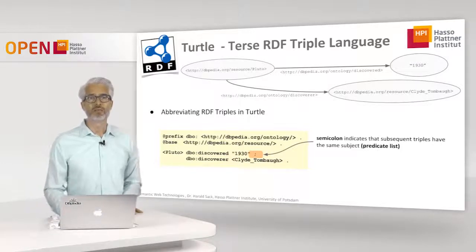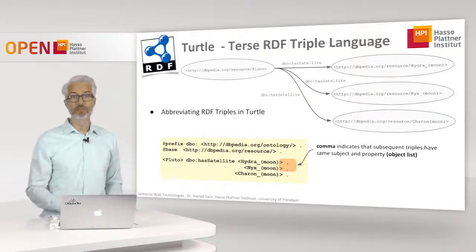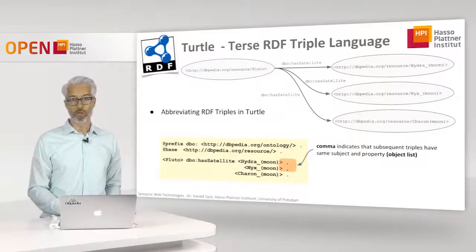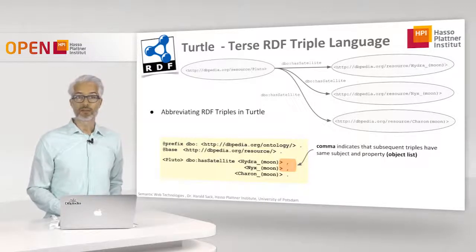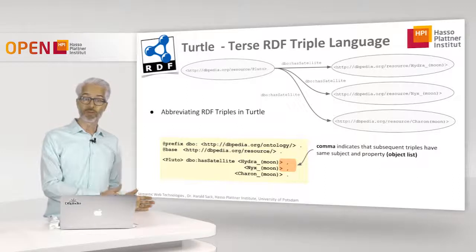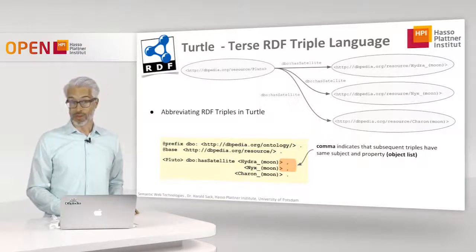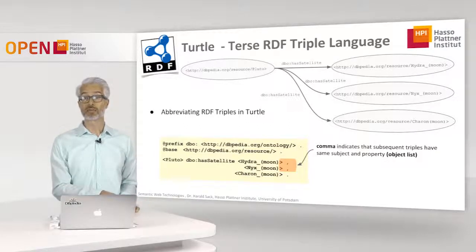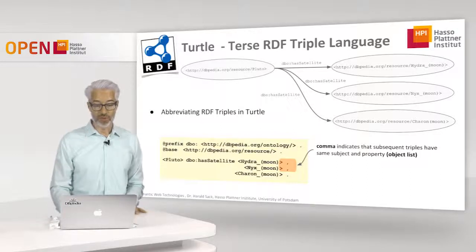You could also imagine having the same subject and the same predicate but different objects. There is a possibility in Turtle for this too. For example, in the graph representation, planet Pluto has satellites: Hydra, Nix, and Charon — the largest moon of Pluto. To represent this in Turtle, we have Pluto once, the property DBO has-satellite once, and then all three moons separated by commas. Closing the first triple with a comma means all subsequent triples share the same subject and the same property — this is a so-called object list. This further enhances the readability of these files.